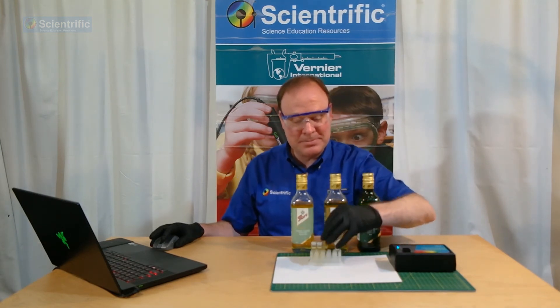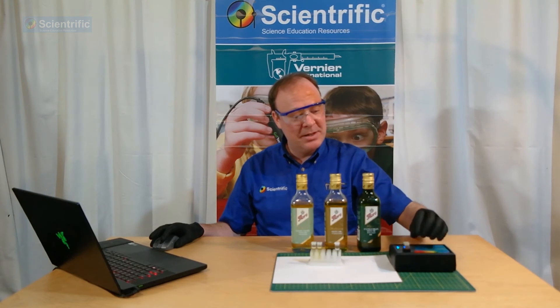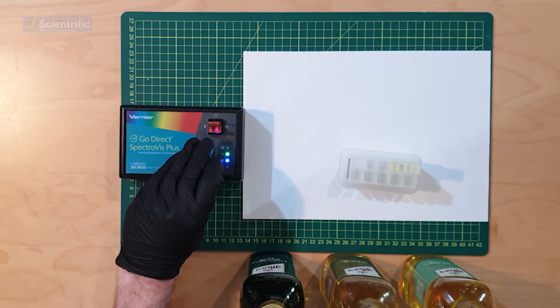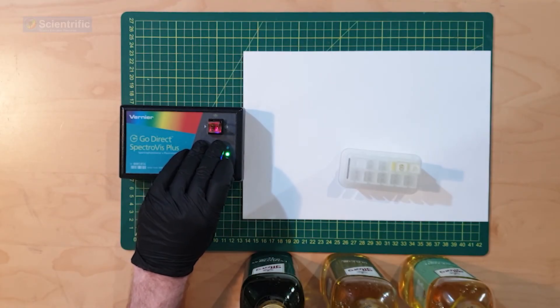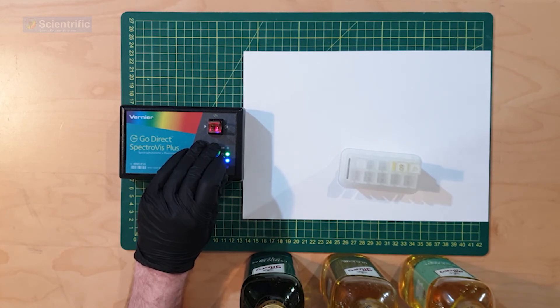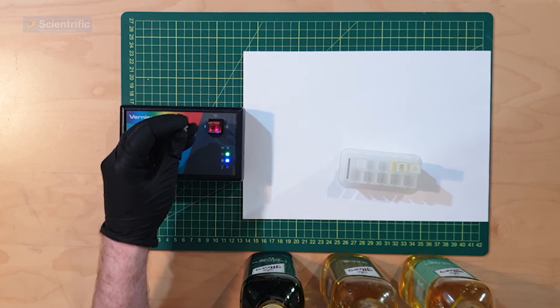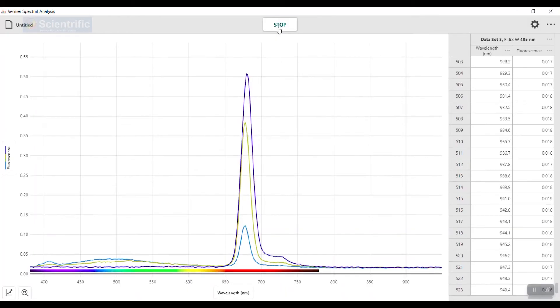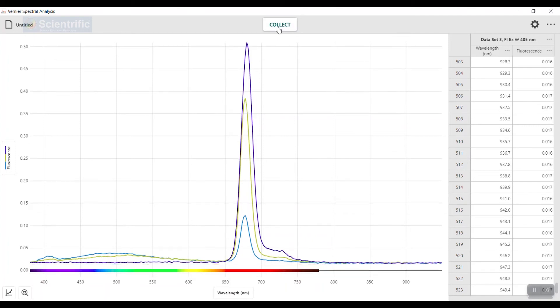Now for our last one, the extra virgin olive oil. Pop that in there, and if you look carefully—I'll carefully take the lid off—you'll actually see that unlike the other ones, which had a slight blue tinge, this one has a red tinge. The wavelength has gone through the blue part of the spectrum, excited the molecules, and now it's fluorescing at red. Very noticeable with this one. We'll pop that back on and hit collect. You get that wonderful peak there. I'll hit stop.